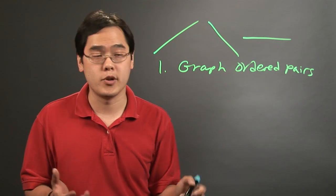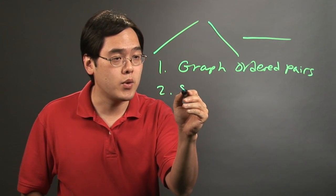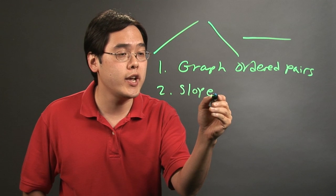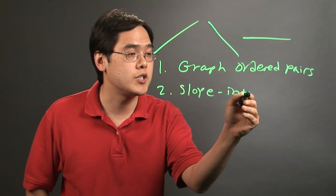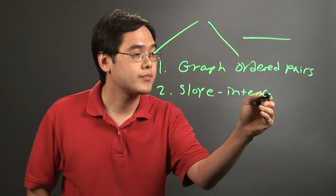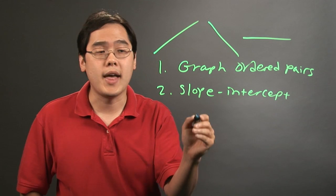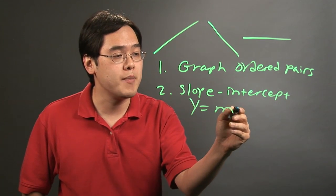Now if you're not given a bunch of ordered pairs, you may want to use a linear equation, and one of which is the slope-intercept equation. And that is a form y equals mx plus b.